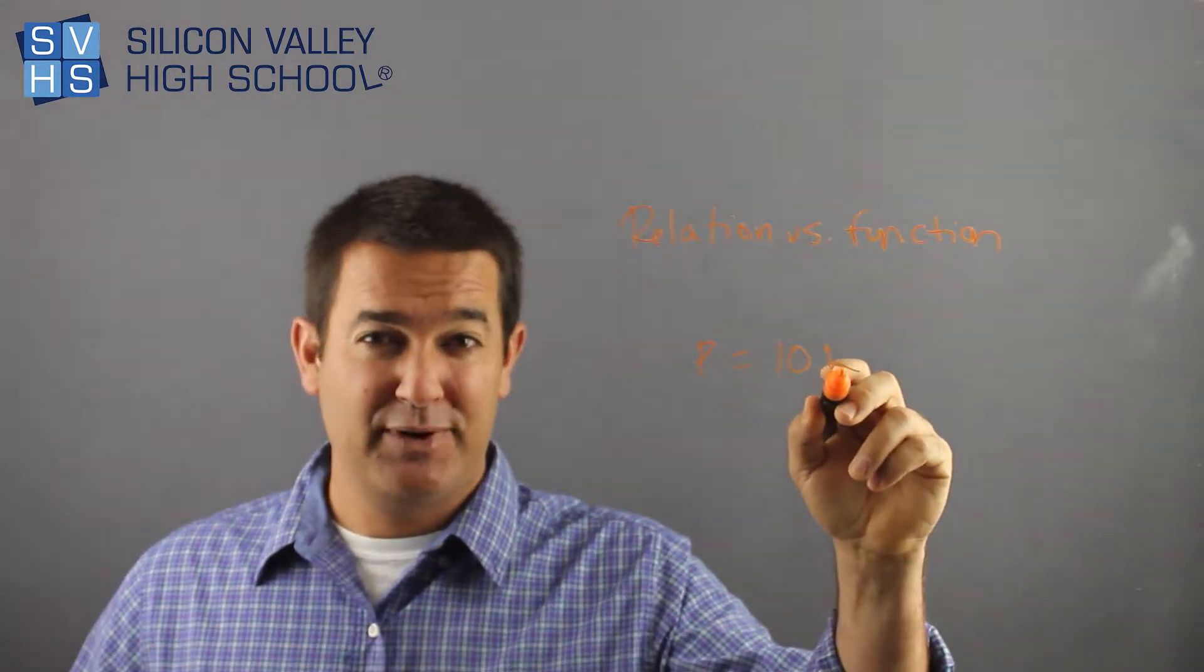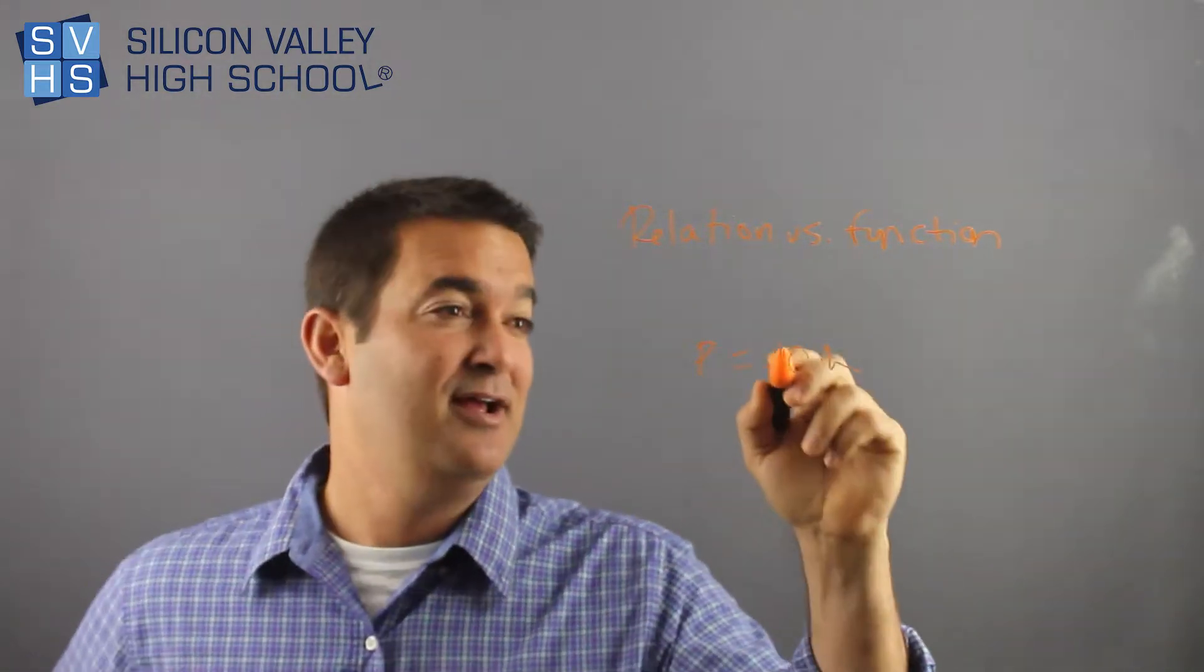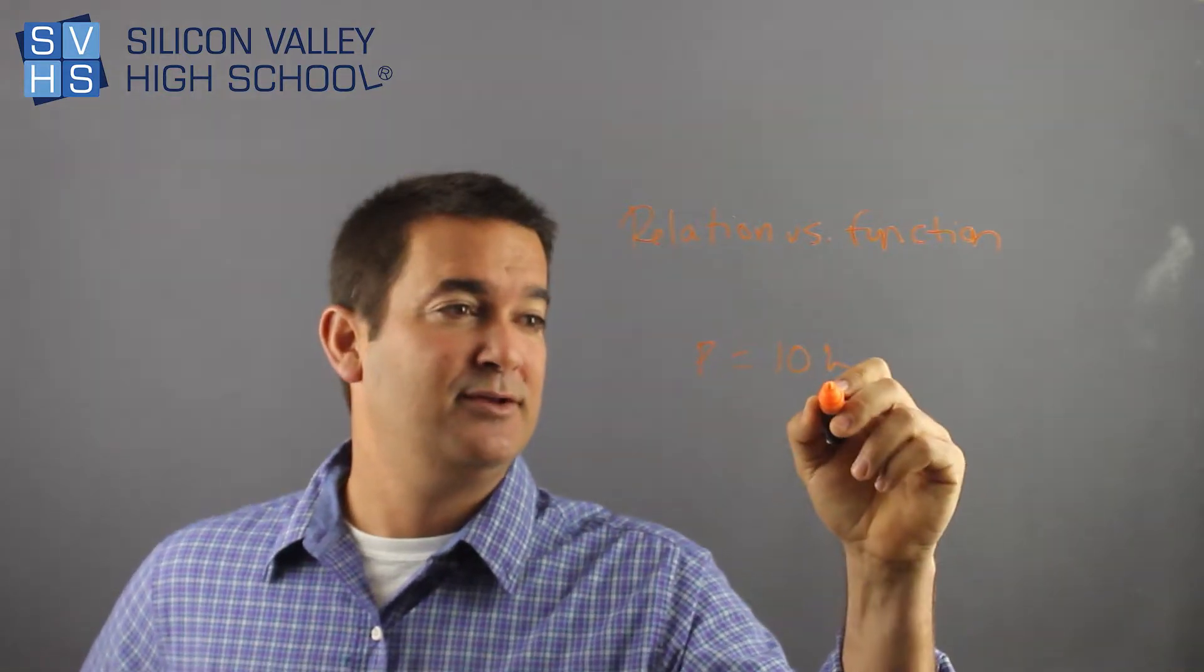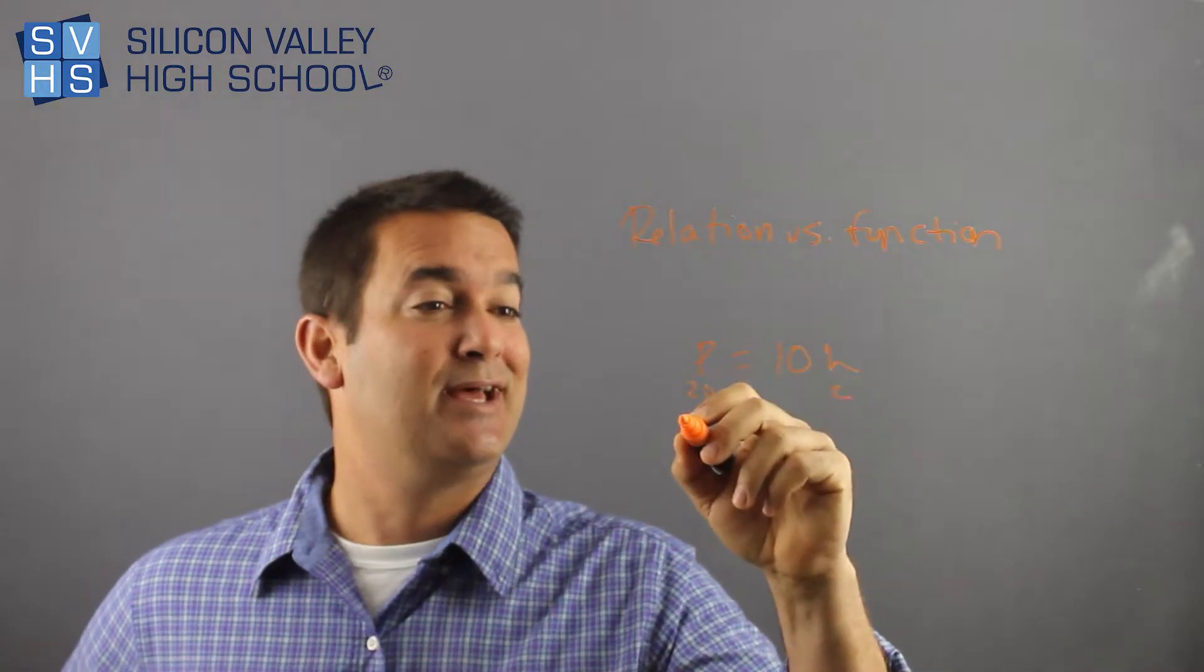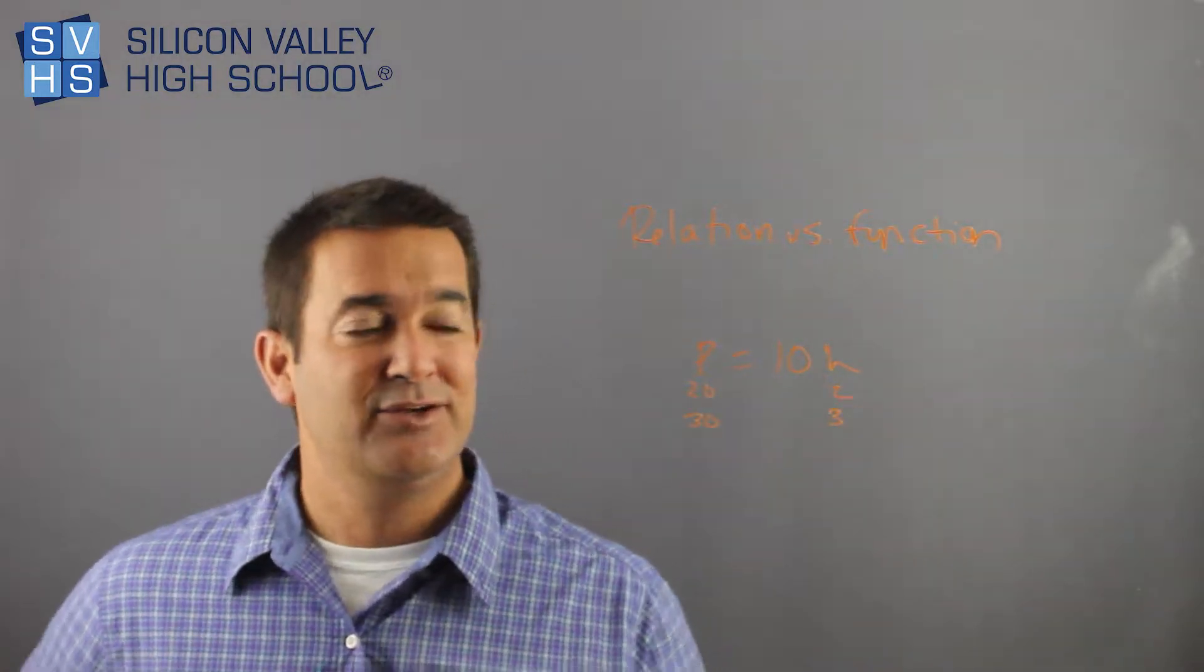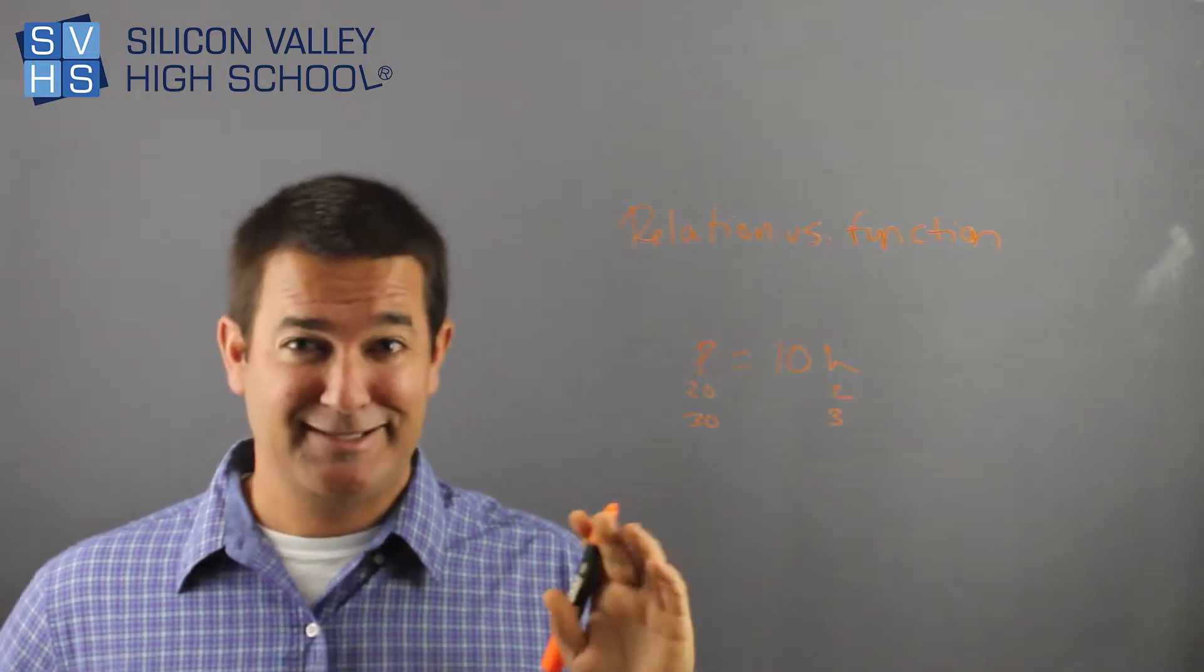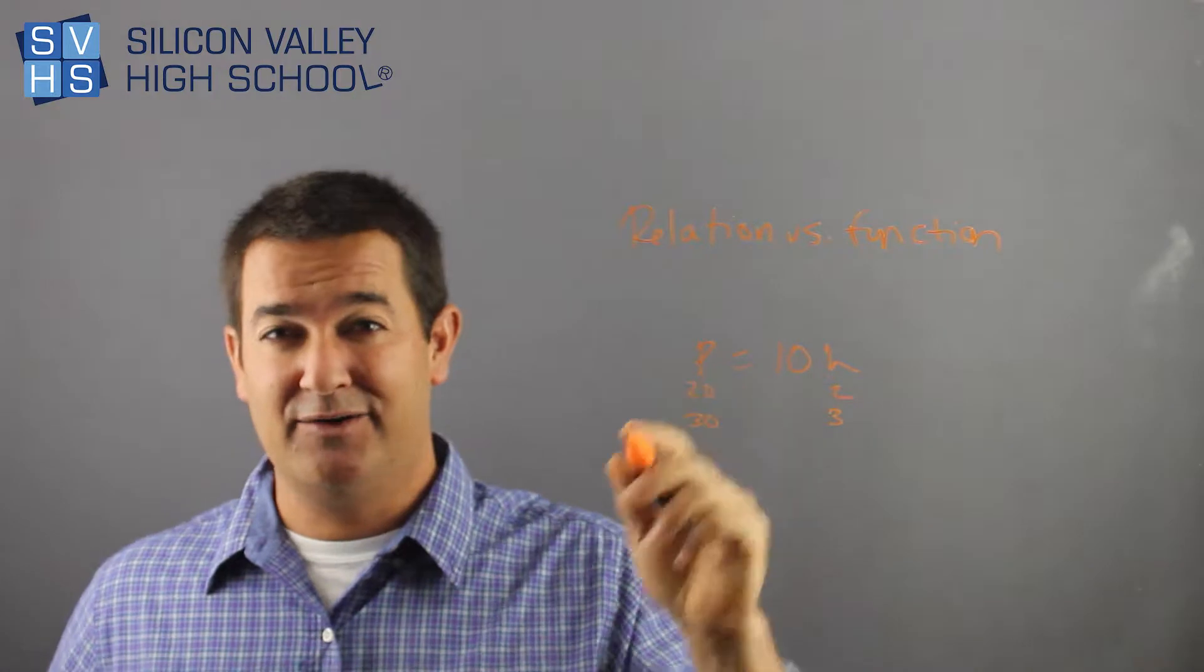And notice that every time I put in a different H, I get a different P. If I put in 2 here, let's do this in our head. If I put in 2 for H, 10 times 2 is 20, right? 2 here would give me 20 here. If I put in 3 for H, 3 times 10 would give me 30. So you'll notice that every input,